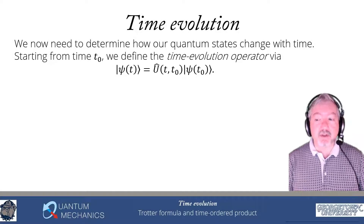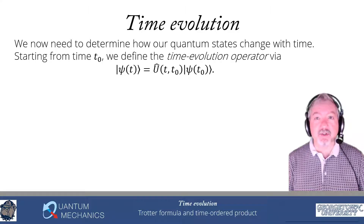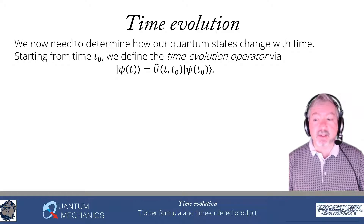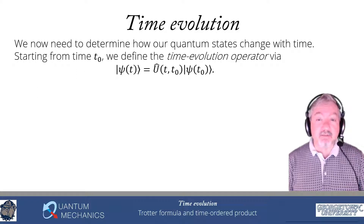Notice this operator works for any wave function ψ(t). It's not an operator specific to ψ — there's no ψ subscript for this U operator. It's a general operator that takes a quantum state at one time and maps it to the quantum state at a later time. It takes a vector in our state space and maps it to another vector in our state space. One operator doing the time evolution for everything sounds complicated, but we'll see it's really not so bad.